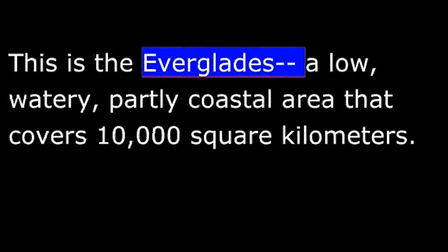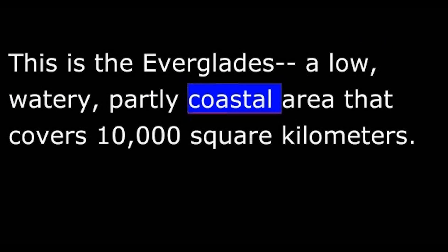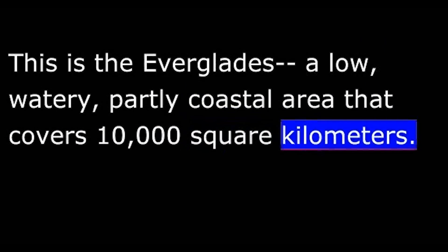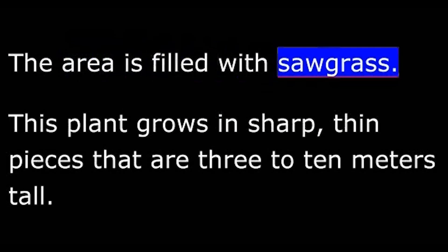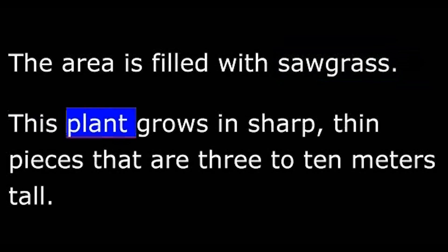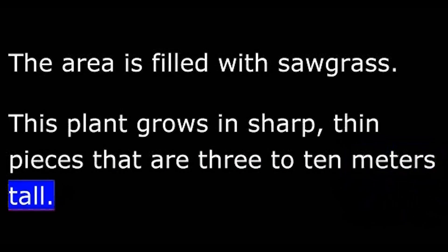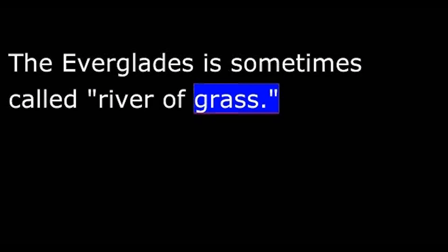This is the Everglades, a low, watery, partly coastal area that covers 10,000 square kilometers. The area is filled with sawgrass. This plant grows in sharp, thin pieces that are 3 to 10 meters tall. The Everglades is sometimes called river of grass.